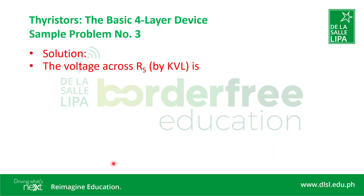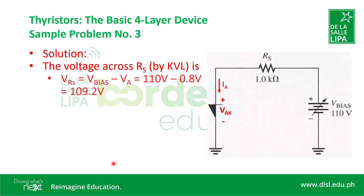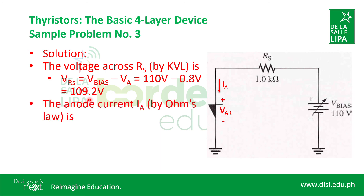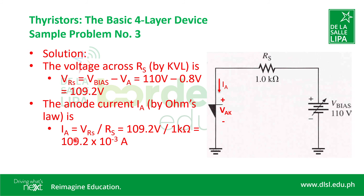With V_AK determined, we apply KVL: the voltage across R_S equals V_bias minus V_AK, which is 110V minus 0.8V, equal to 109.2 volts. Finally, using Ohm's law to get the anode current I_A: I_A equals V_RS divided by R_S, which is 109.2 volts divided by 1 kilohm, equal to 109.2 milliamps. This is the final answer for the anode current.